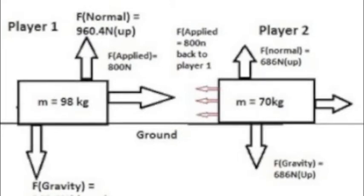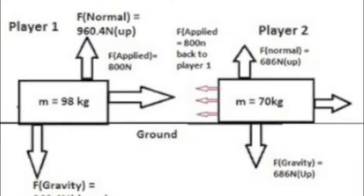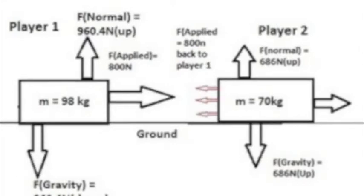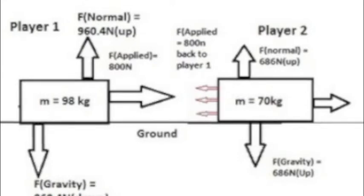In the diagram it also shows the gravity of each player and the normal force. Since player 1 weighs more than player 2, player 1 is going to have more gravity, normal force, and applied force, which means player 1 is going to have a more forceful hit.